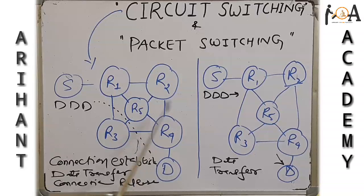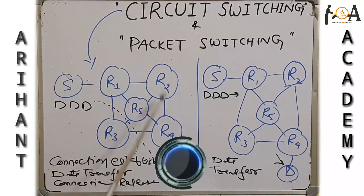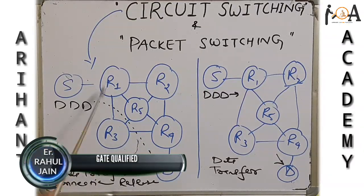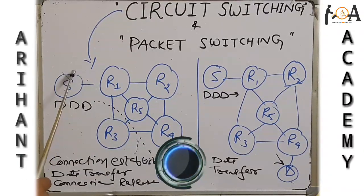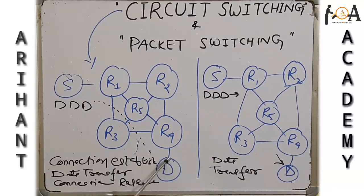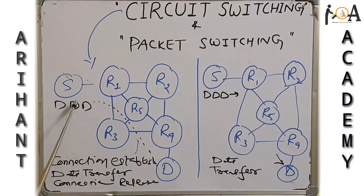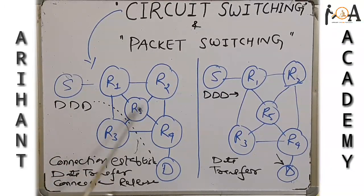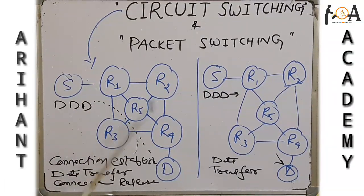Suppose this is a circuit switching network in which several computer systems are added. There is a source device and a destination device. To send a message in circuit switching, first a connection establishment will occur — the connection is established throughout a proper channel. Once the connection is established, data is transferred, and then the connection is released — connection termination.